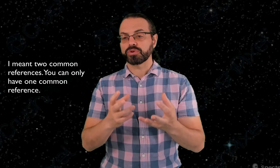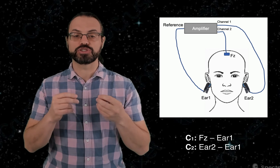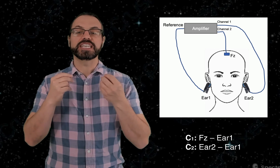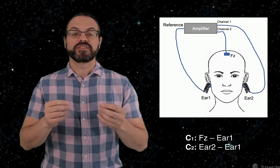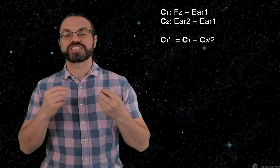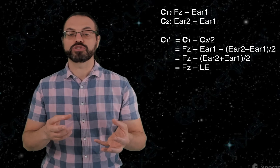That's relatively simple, but often you will see the reference as linked ear or linked mastoid. How do we do that? You can't record the data with two reference channels, so you record the signal with one reference and calculate the linked reference offline. So let's say channel 1 is FC minus ear 1, and channel 2 is ear 2 minus ear 1. Instead of ear 1 as the reference, we want the reference to be the average of ear 1 and ear 2 — this is what linked earlobe reference is. To do that, we can just compute channel 1 minus channel 2 divided by 2. We will call this channel 1', and channel 1' simplifies to FC minus the average of the two ear channels.